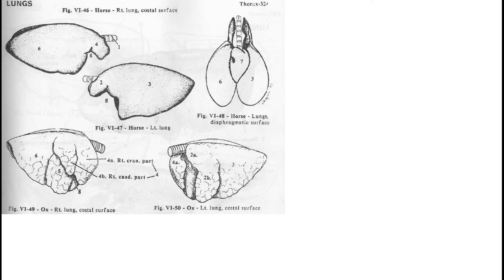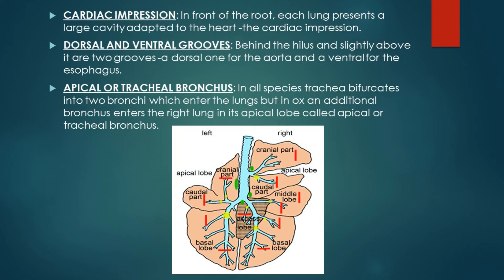The cardiac notch: the right lung presents a large quadrilateral cardiac notch which extends from the ventral end of the third intercostal space to the fourth intercostal space. Here the pericardium and heart are in contact with the chest wall. Dorsal to this notch there is a fissure. This cardiac notch is the area where the heart and pericardium are in direct contact with the chest wall.